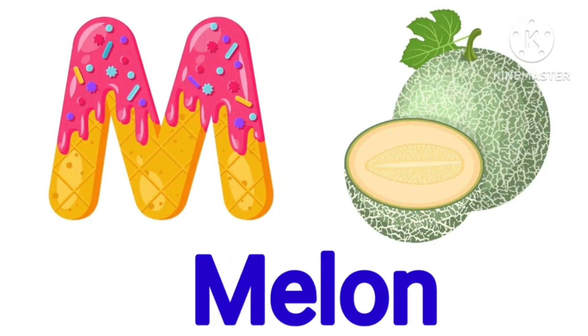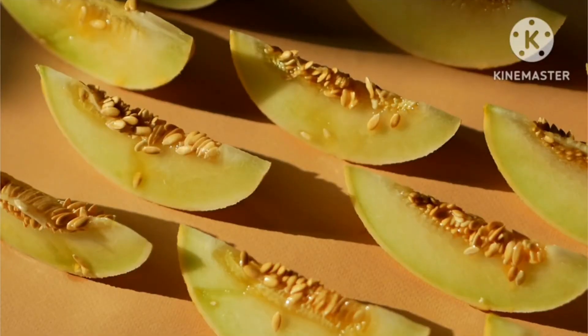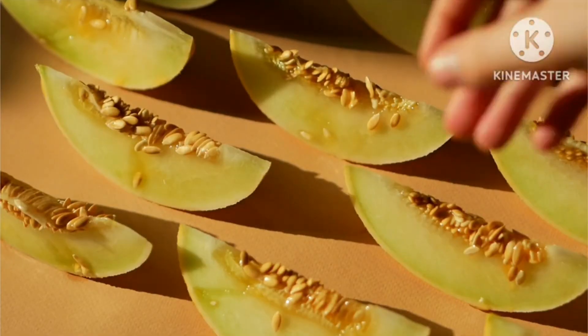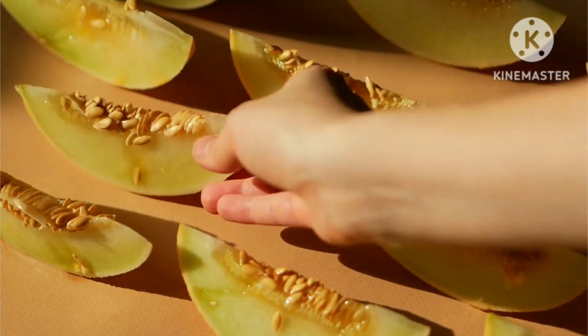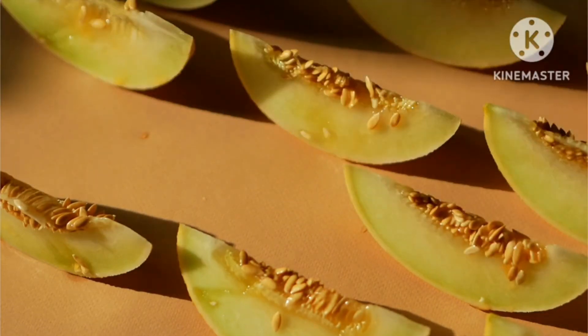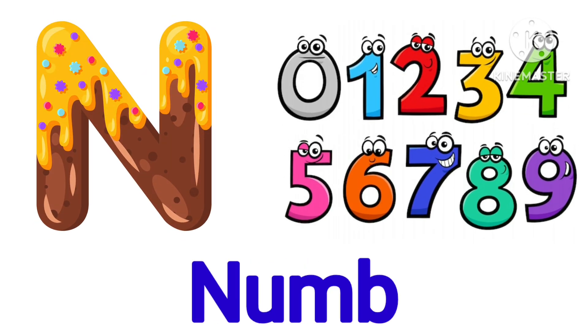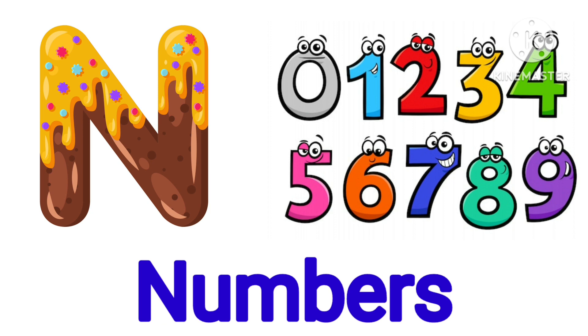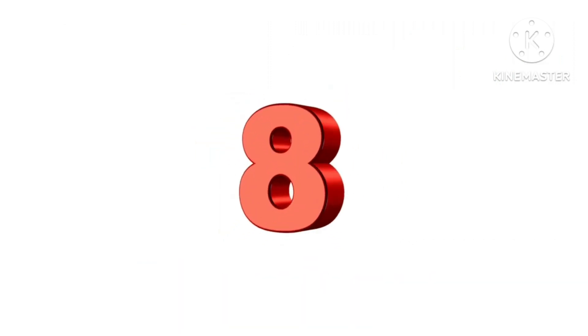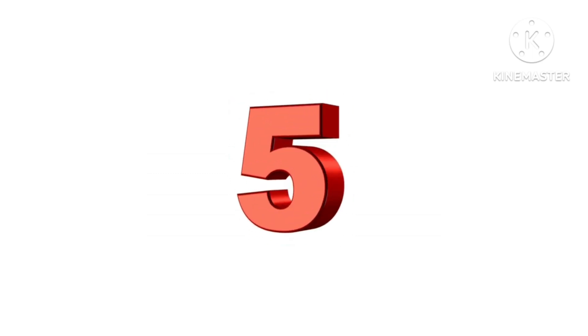M is for melon. What is M for? M is for melon. N is for numbers. Come on, repeat after me again — N is for numbers.